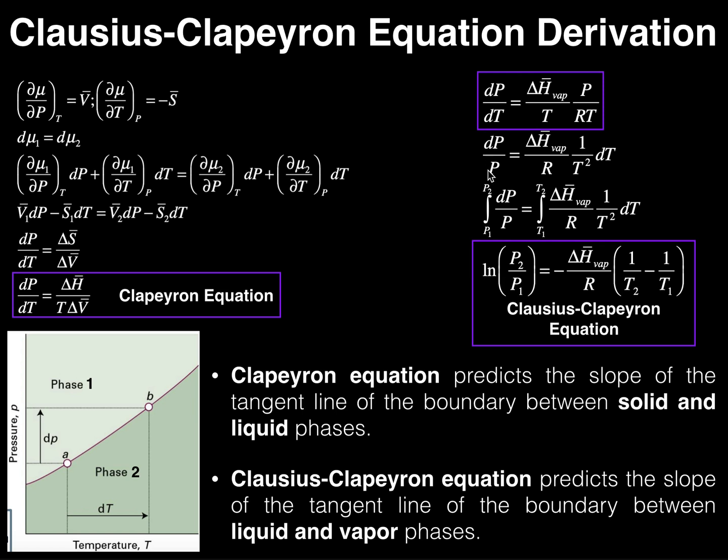So if I integrate the left side, it would be from pressure one to pressure two. And if I integrate the right side, it would be temperature one to temperature two. And what you can show through integrating this is, if you integrate this correctly, you get the Clausius-Clapeyron equation. And so the Clausius-Clapeyron equation down here in its most useful form is the natural log of P2 over P1 is equal to the negative change in molar enthalpy of vaporization over R times the quantity one over T2 minus one over T1.